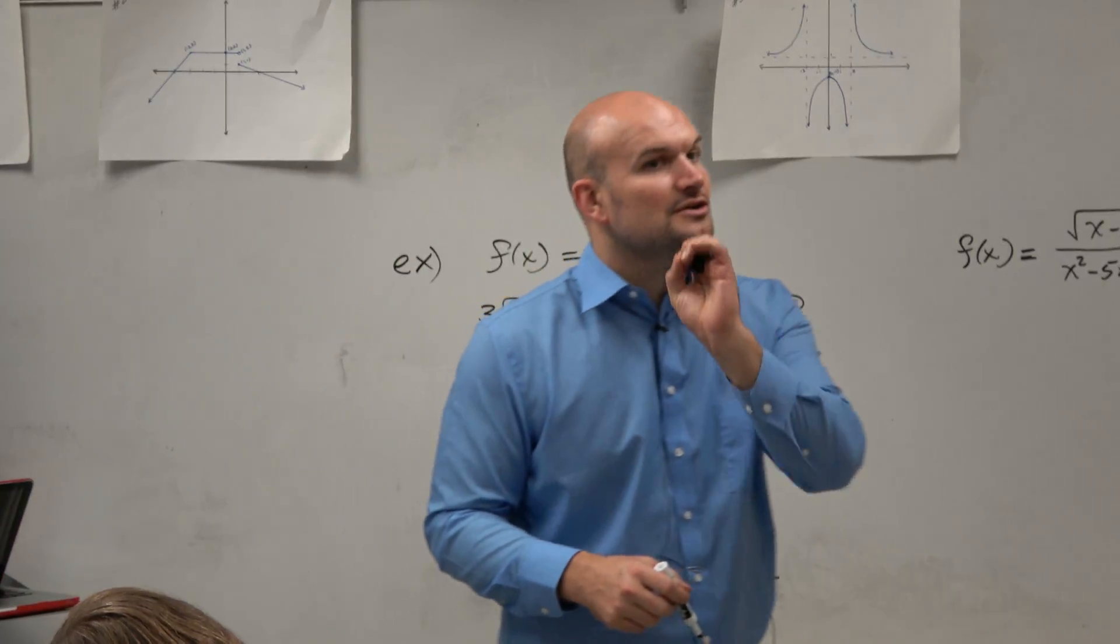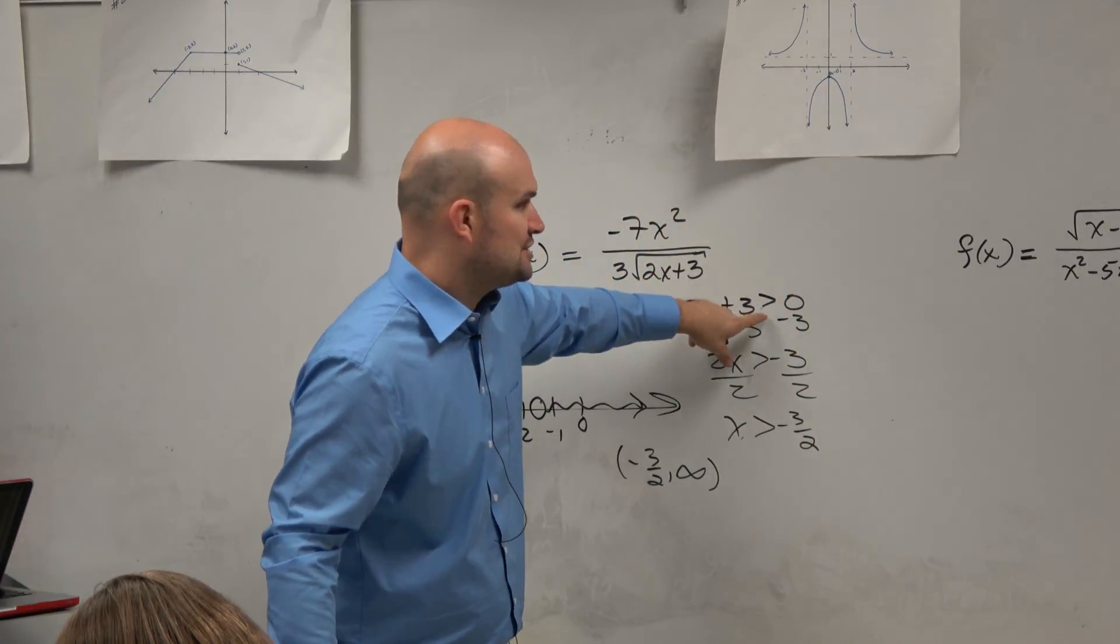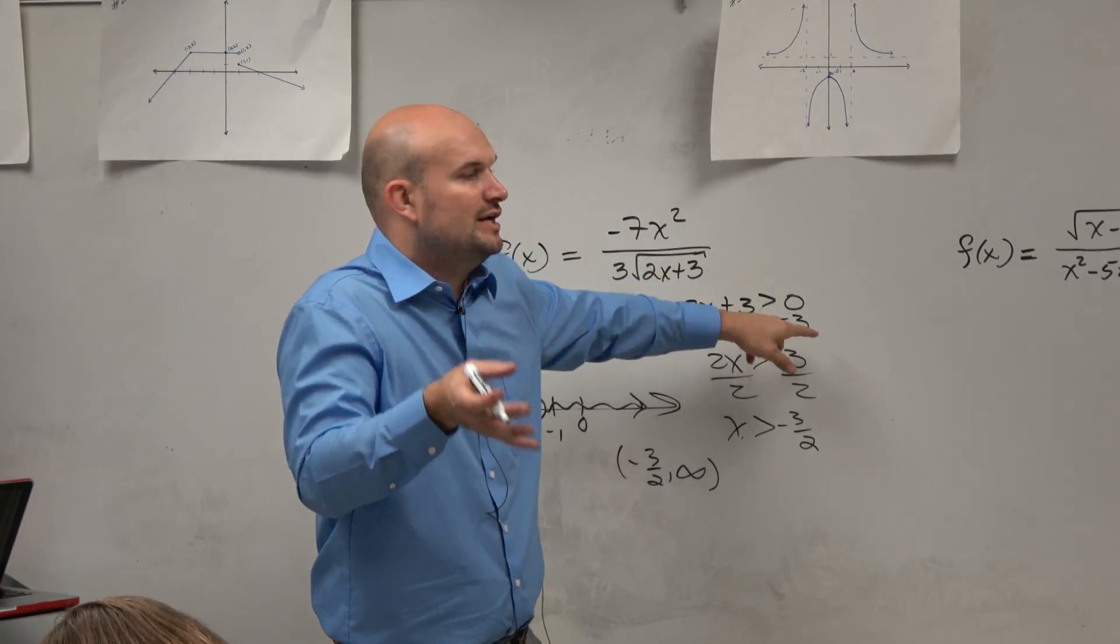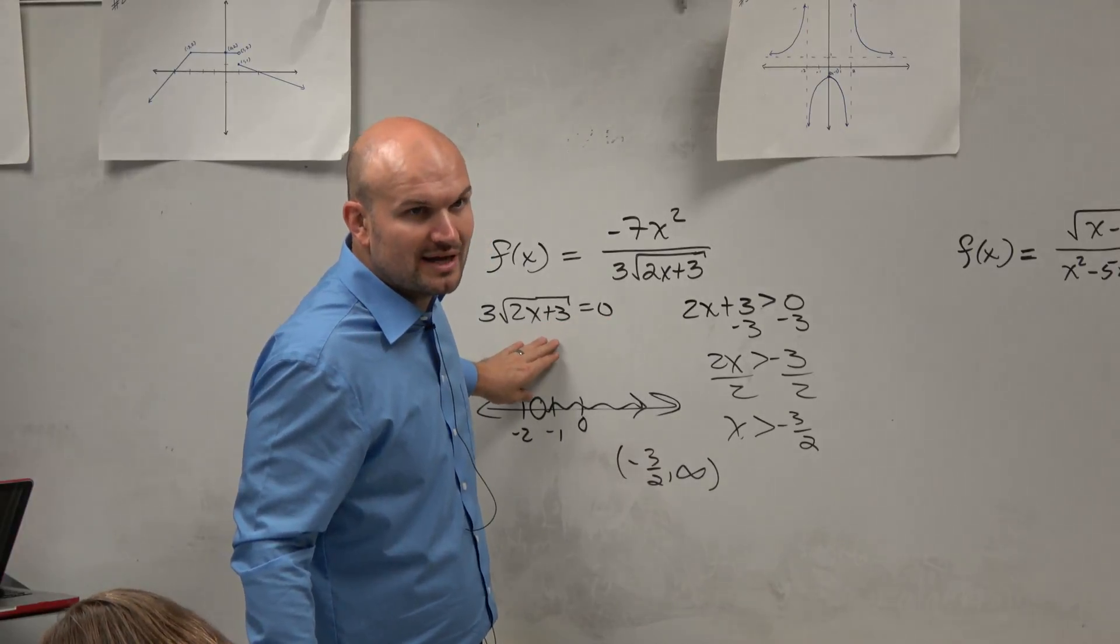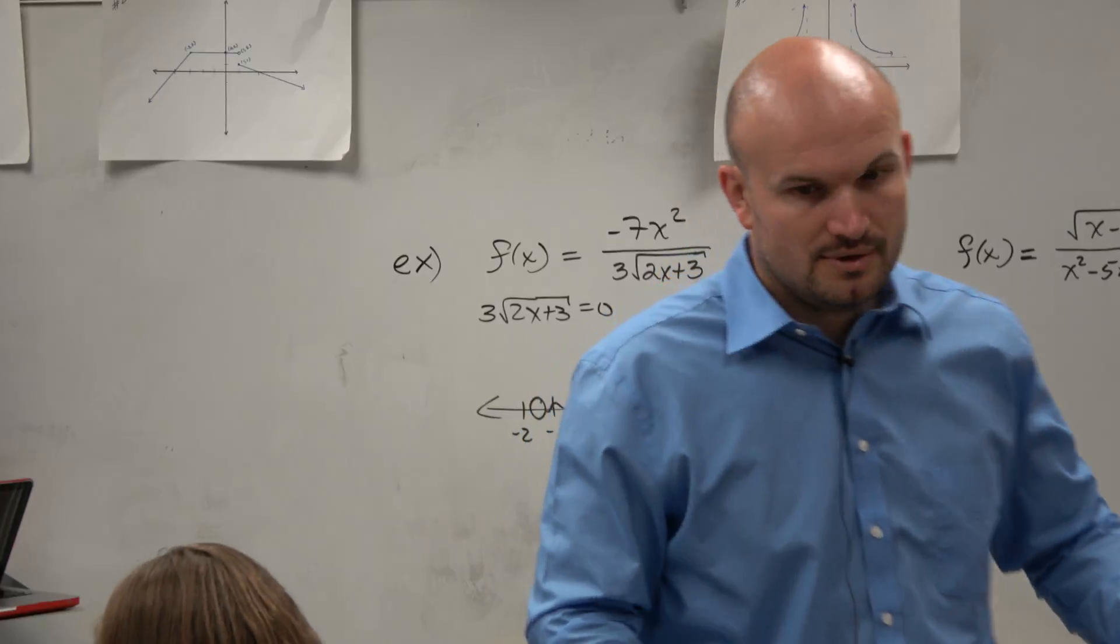So it's excluded, not included. And again, since the radical's in the denominator, I just change it to be greater than, not greater and equal to. So therefore, I don't have to worry about that constraint. Anybody have any questions with that? No. OK.